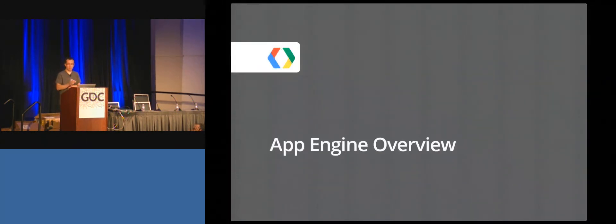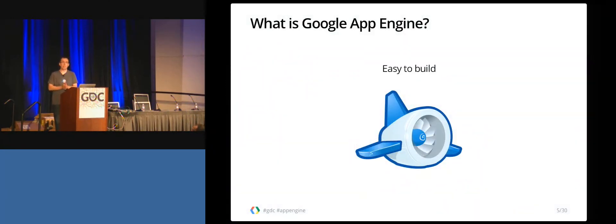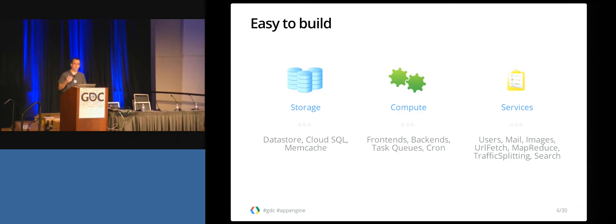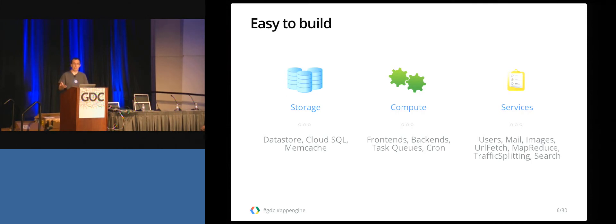So to start off, I'm going to do a very brief overview of App Engine. App Engine is a really great way for you to build applications running on Google's infrastructure that makes it easy to build, easy to scale, and easy to maintain your applications running in the cloud. You can write your applications in three runtimes: Java, Python, and Go. We also have a bunch of services like a NoSQL datastore, Cloud SQL, Memcache, different types of environments for front ends and back ends, task queues for dividing up work into small tasks, and cron jobs for running things periodically.